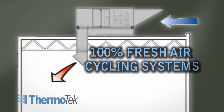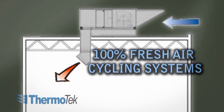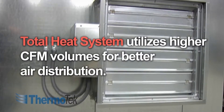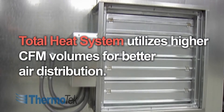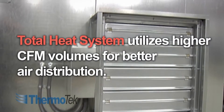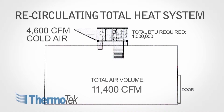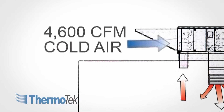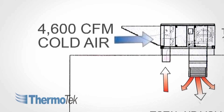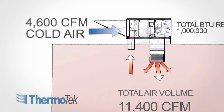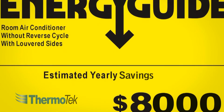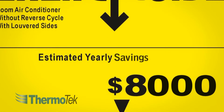Unlike the 100% fresh air high temperature cycling system, the total heat system utilizes higher CFM volumes for better air distribution. At the same time, by incorporating recirculation capability, the system is able to use less cold fresh air, in return reducing total gas consumption and producing astonishing energy cost savings.